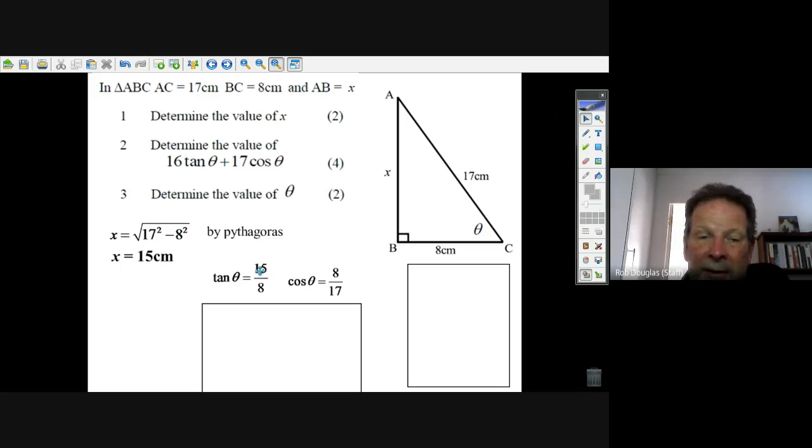Now substitute those fractions into the expression. 16 × (15/8) = 30, and 17 × (8/17) = 8. Your answer is 38 centimeters.